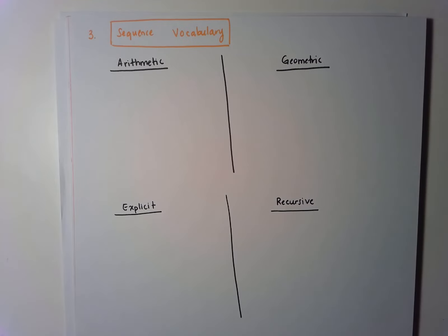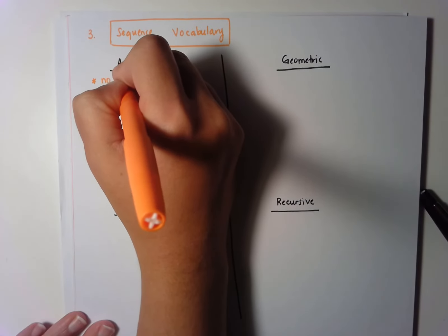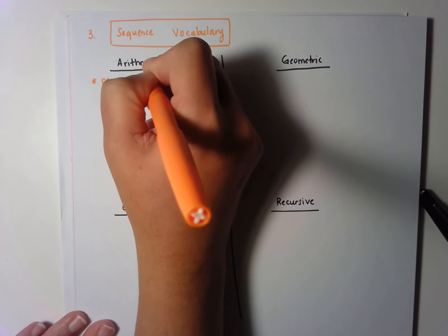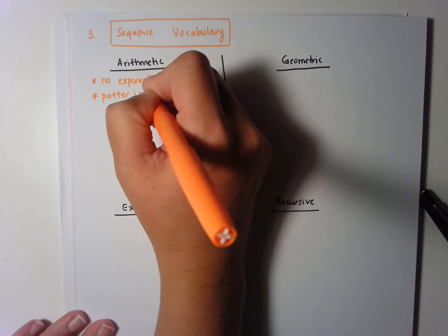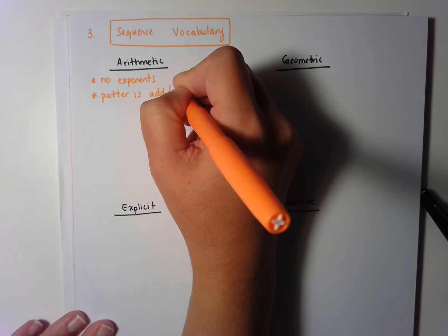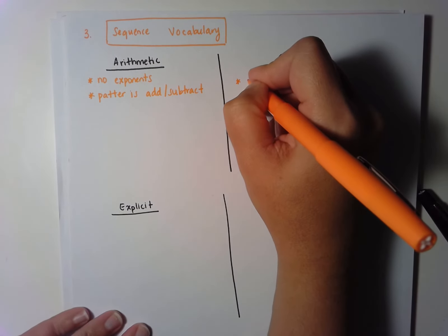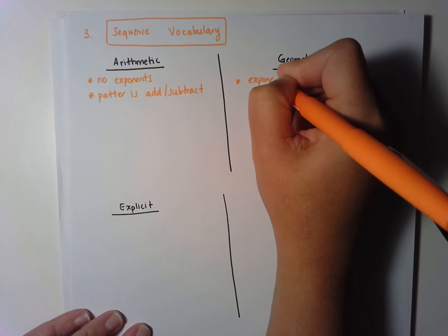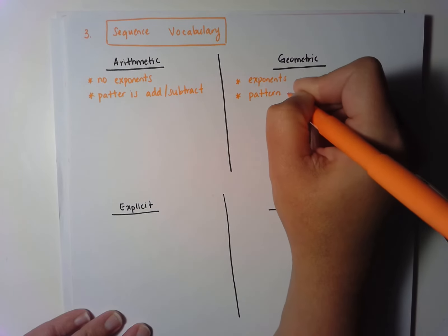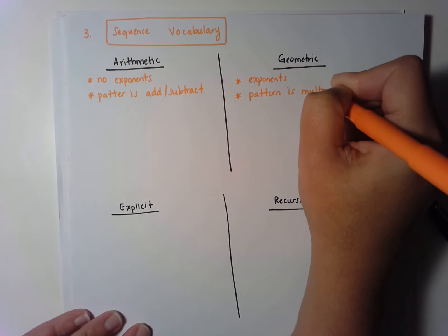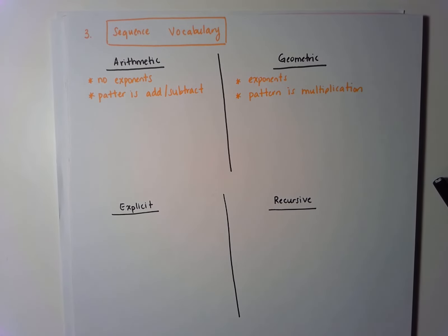Here's how we're going to do this. We're going to know that we have an arithmetic sequence if there are no exponents in the equation, or if the pattern is adding or subtracting. We're going to know that we have a geometric sequence if the equation does have exponents, or if the pattern is multiplication. Let me write down some examples to show you how you would tell the difference.